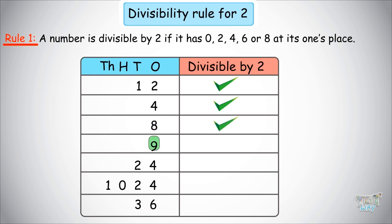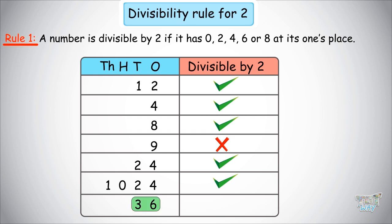9 — no. 24 — yes, it is divisible by 2 because there is a 4 in the ones place digit. 1024 — yes, it is divisible by 2. 36 — yes, this is also divisible by 2.